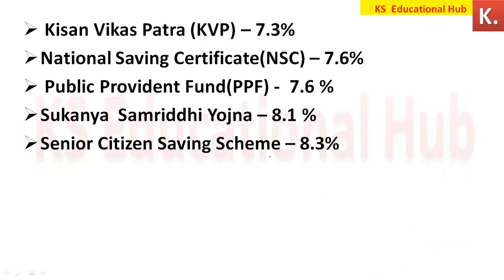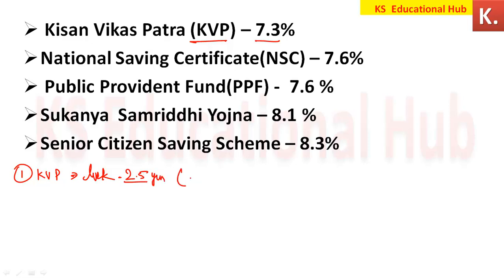First, let's look at interest rates. The current interest rate in KVP (Kisan Vikas Patra) is 7.3%. If you look deeper, the exam may ask: what is the locking period of KVP? The lock period is 2.5 years. If you look at the maturity period, it is 9 years and 10 months, which means more than 118 months — that is 118 months maturity period.